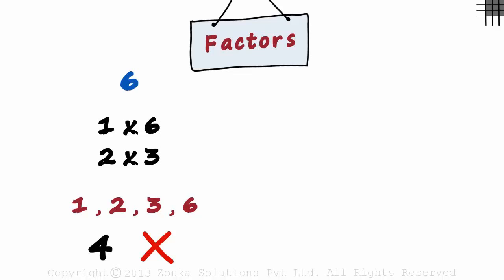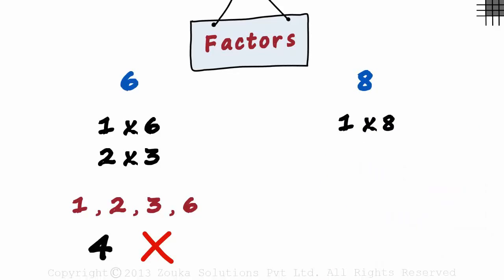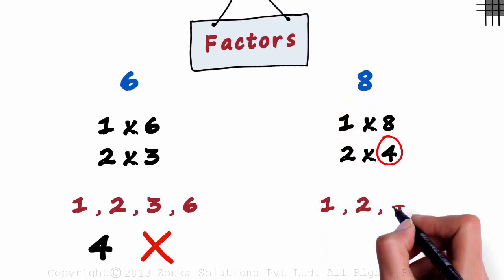Let us also try finding factors for the number 8. 8 can be written as 1 multiplied by 8 and 2 multiplied by 4. There is no other combination of two numbers which gives us 8. So the factors of 8 are 1, 2, 4 and 8.